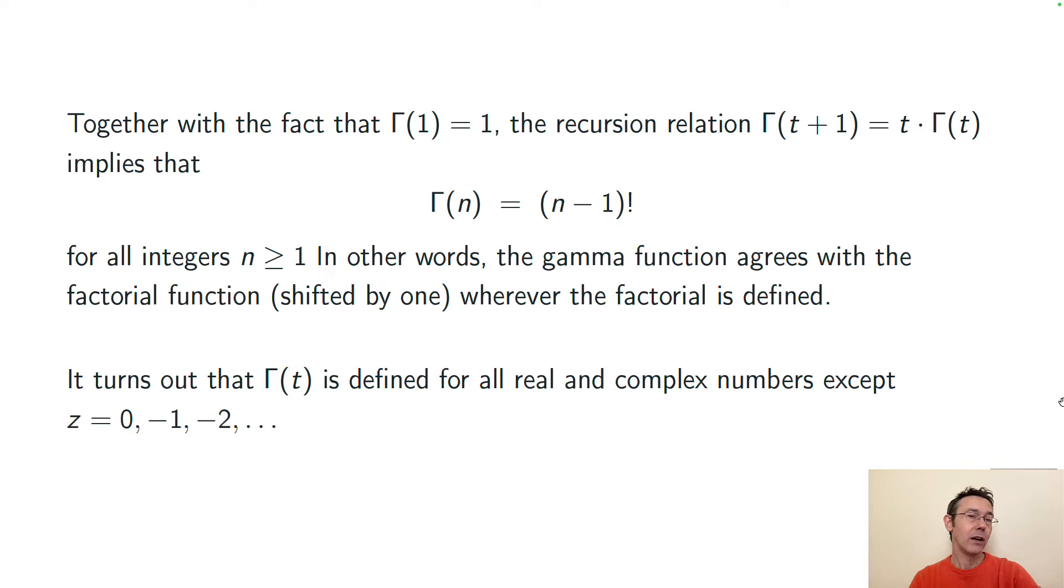But of course gamma is defined using that integral for more than just the positive integers. It turns out that it's defined for any real or complex number that you would like to plug in, except for t equals 0, negative 1, negative 2, the negative integers.